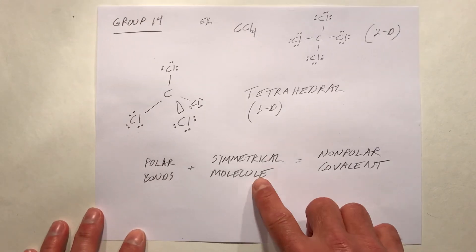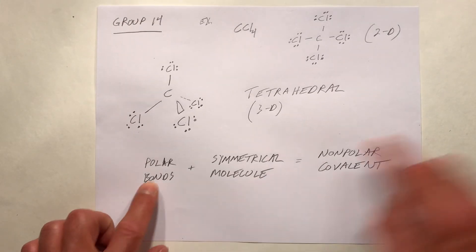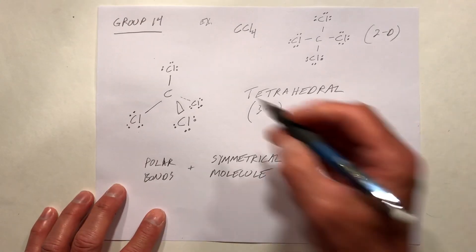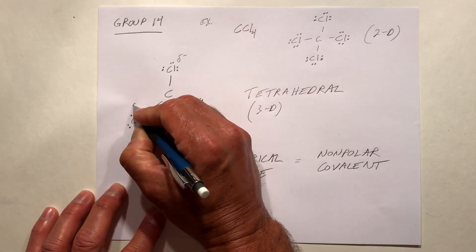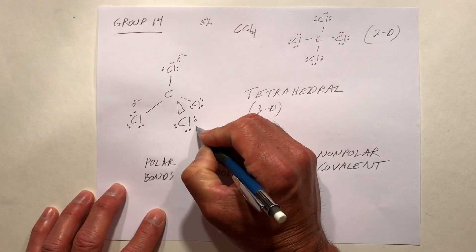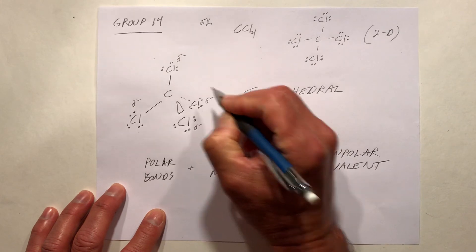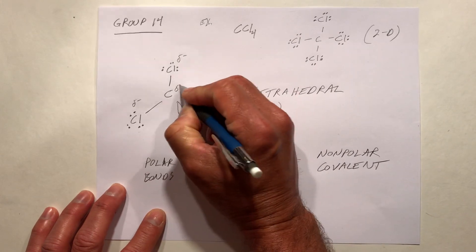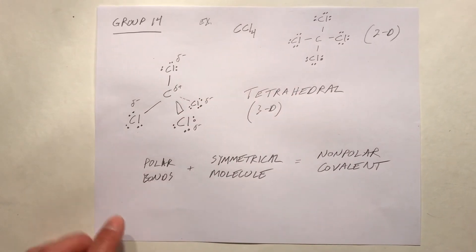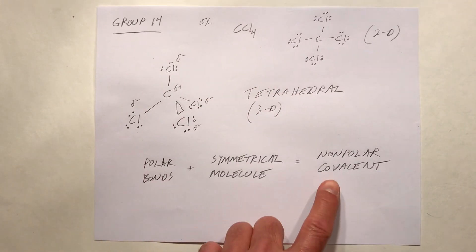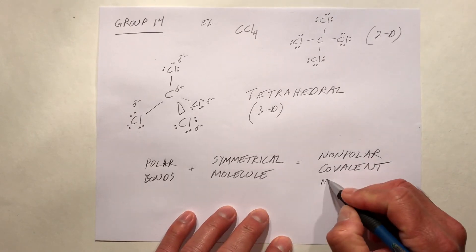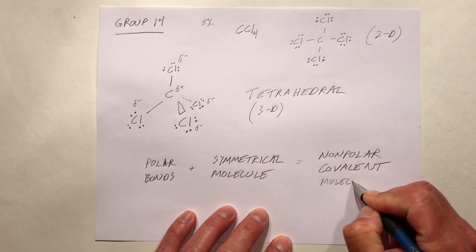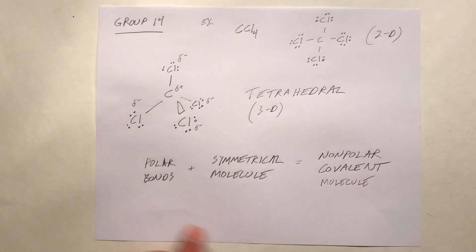Because CCl₄ is a symmetrical molecule, even though it has polar bonds — chlorine's electronegativity is bigger than carbon's, so the chlorines would all be delta minus and carbon would be delta plus — we would say it's a non-polar covalent molecule, even though it has polar covalent bonds.